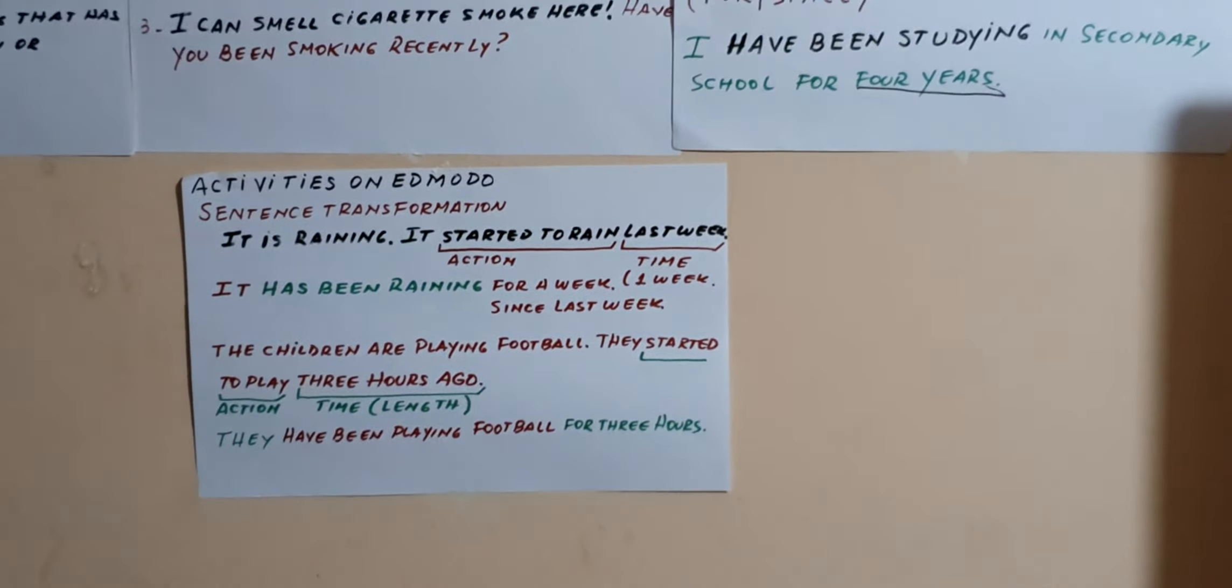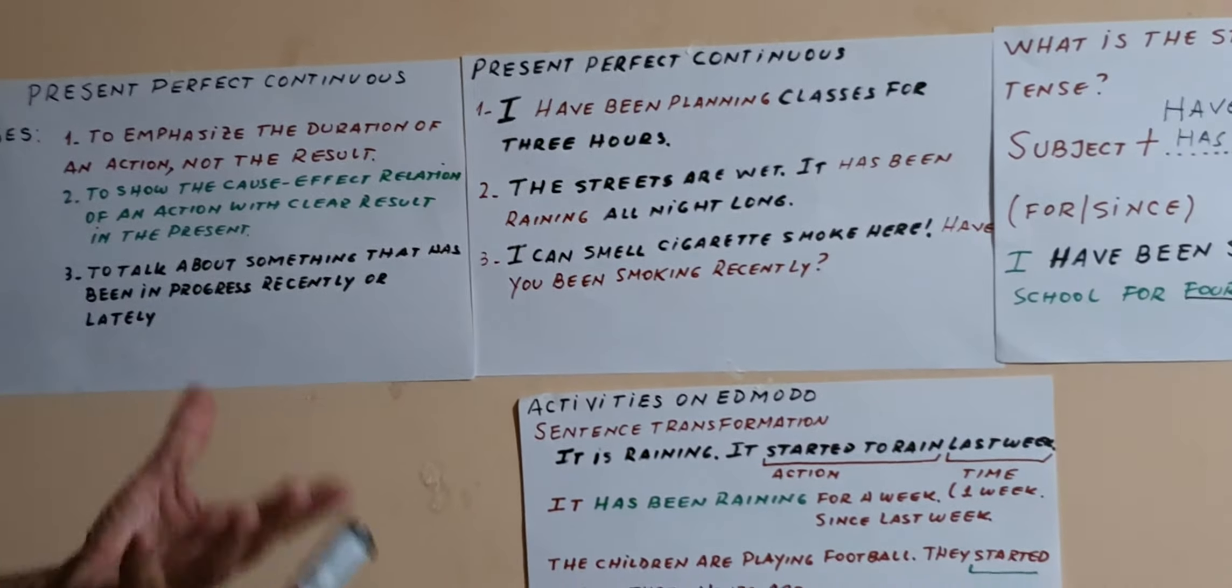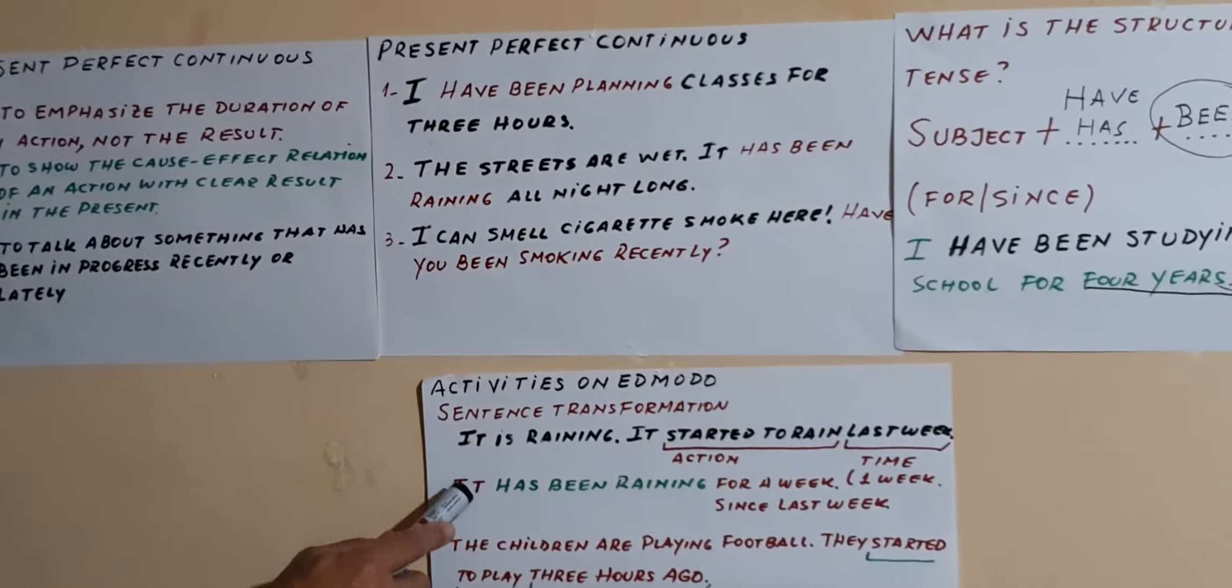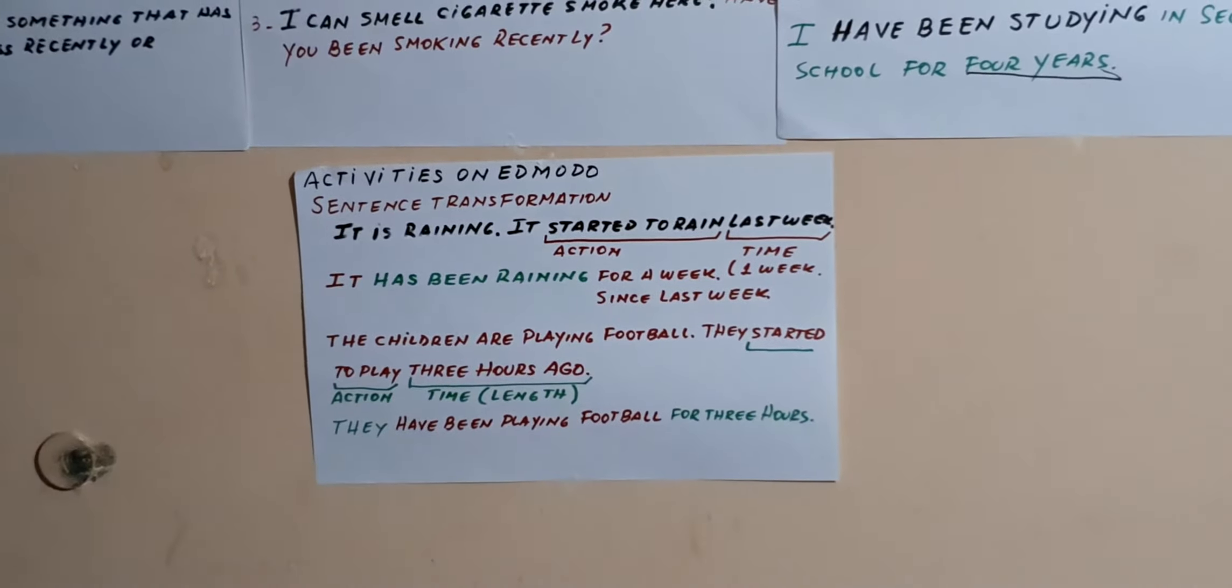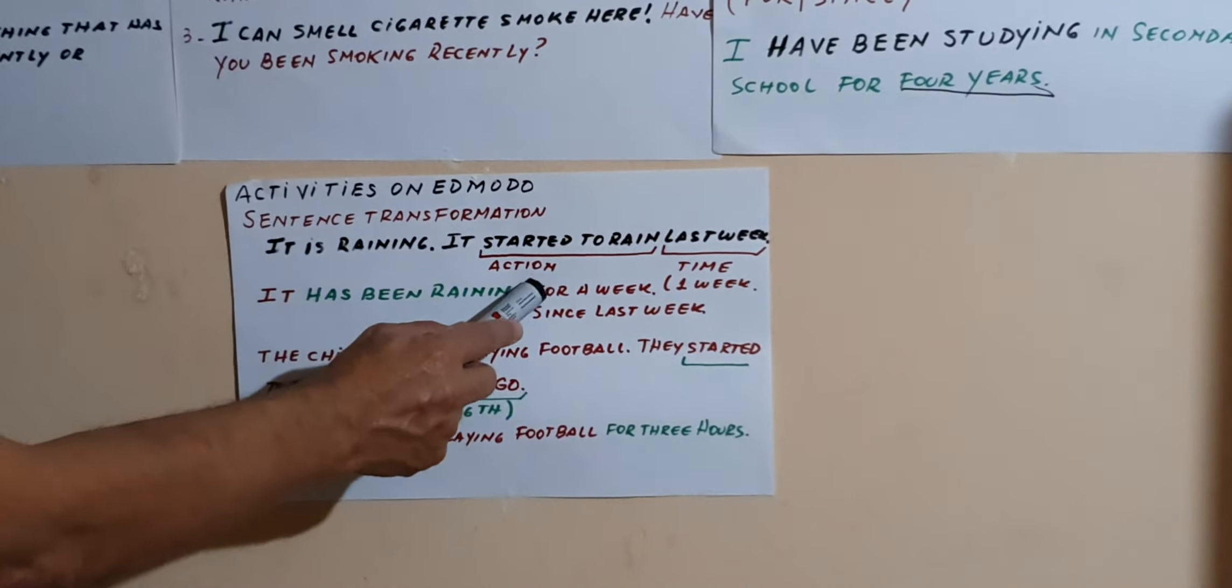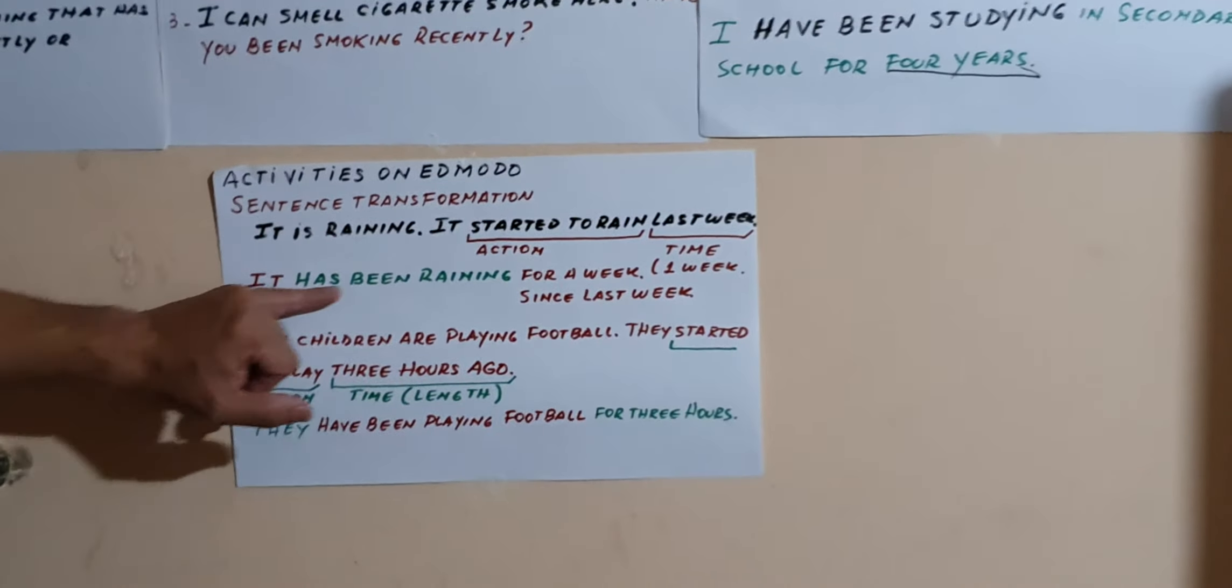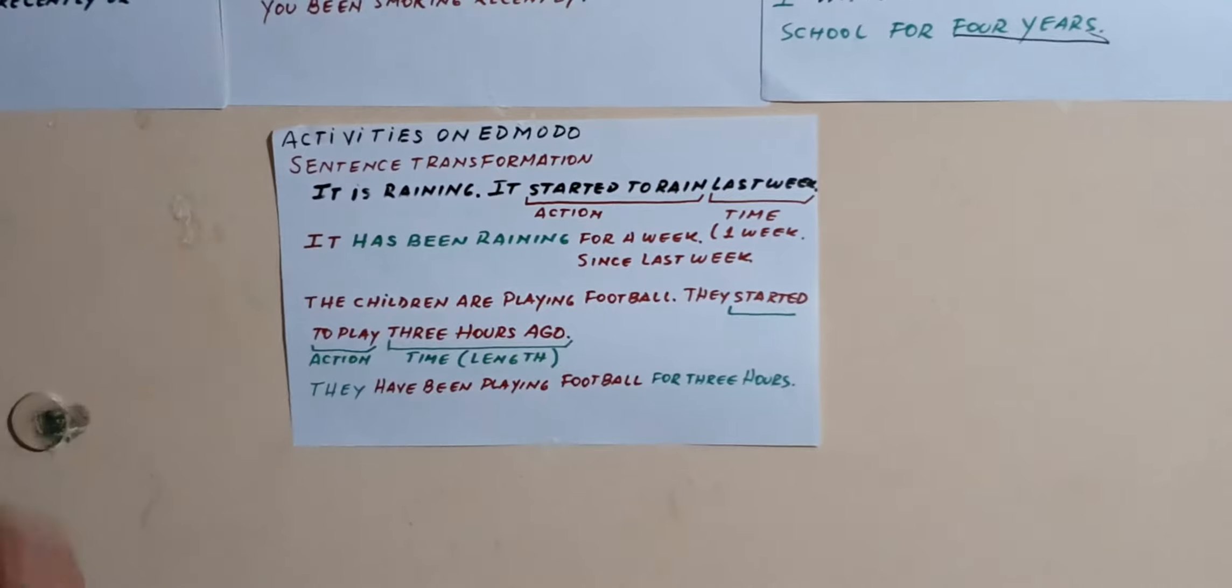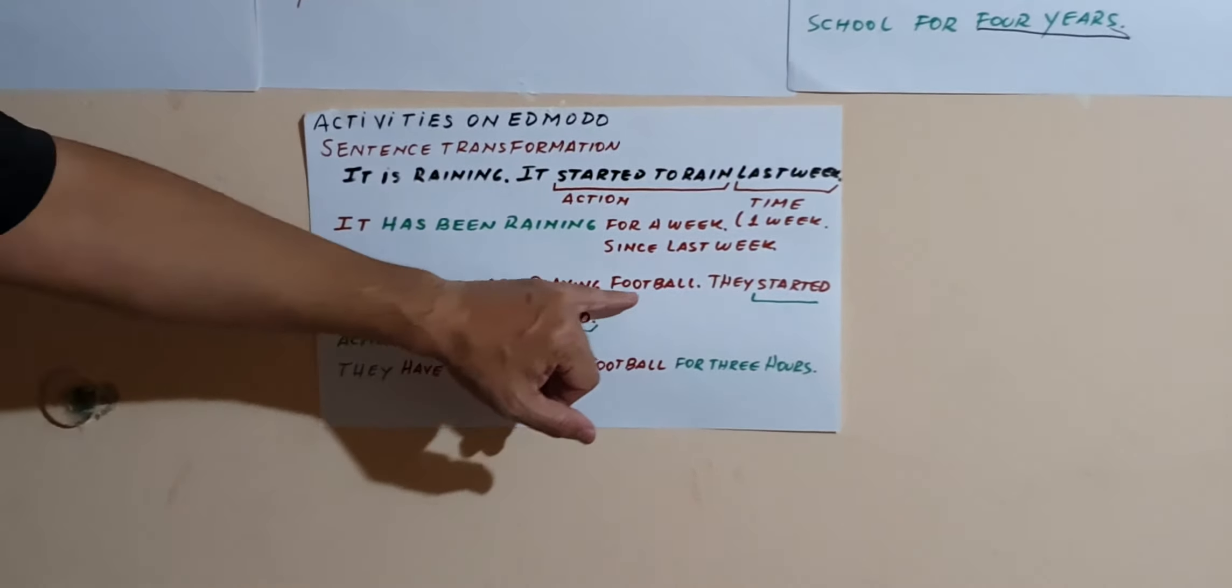For example: it is raining, it started to rain last week. Fíjense, está lloviendo, comenzó a llover la semana pasada. Entonces en el presente perfecto continuo yo quiero usar el primer hacer el primer uso: dar énfasis a que hace una semana que viene lloviendo. So, it has been raining for a week, it has been raining since last week. Podemos utilizar for or since como ustedes quieran, pero acá estamos dando énfasis a la duración de la acción.